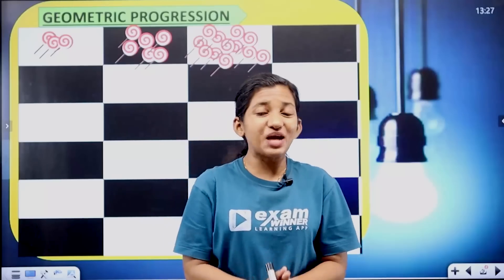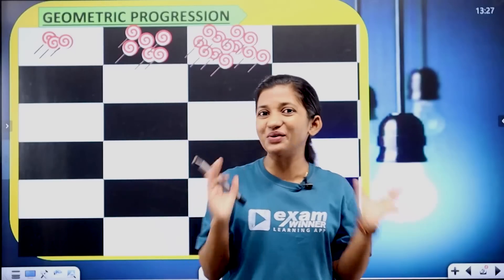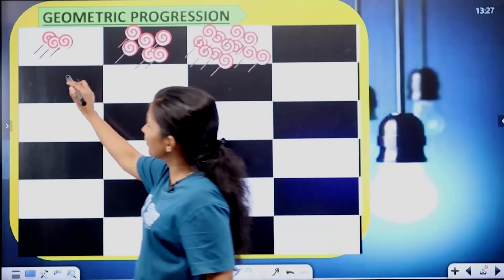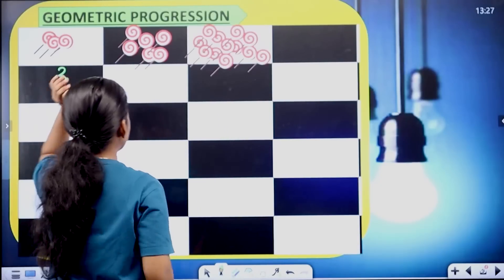Hi friends! Now, let's take a look at our favorite title. First column: 3. Second column: 3.